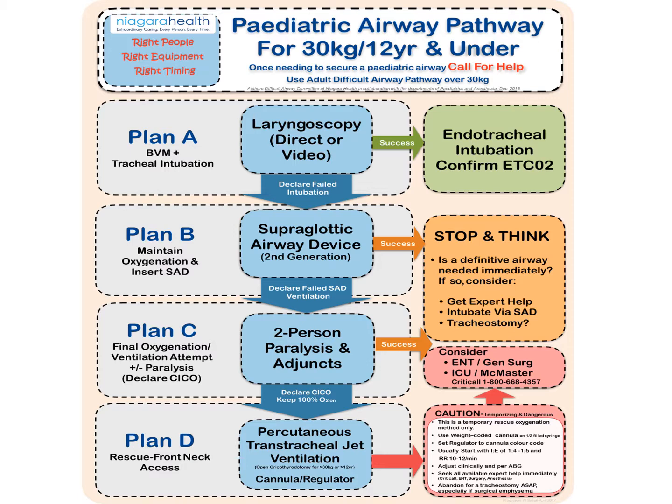This jet ventilation is for kids and is meant to be a rescue device for oxygenation only. We have preset kits with color-coded angiocaths according to the size of the child. The regulator can be dialed to match the color code on the regulator to the cannula. You would insert the device and start with an IE ratio of 1 to 4. Remember this is passive exhalation. We will adjust based on ABGs and clinical saturations, and expert help is needed to move on to a more definitive technique.